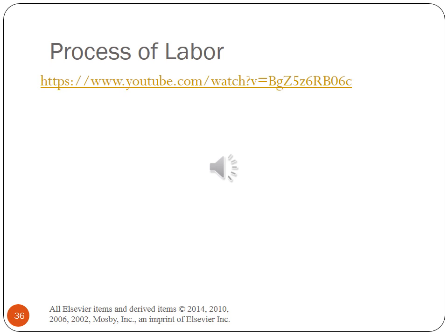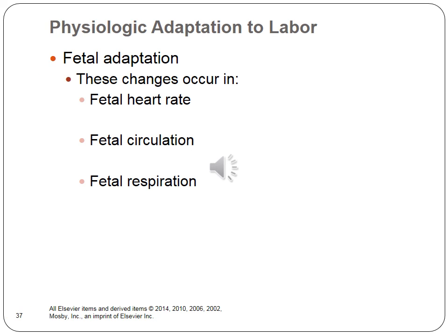This is a YouTube video depicting the process of labor. Fetal adaptation: changes include fetal heart rate, which early in gestation can be as high as 160 beats per minute, and at term around 140 beats per minute. Fetal circulation can be compromised if the cord is compressed. Uterine contractions tend to decrease circulation, but the fetus is able to compensate. In fetal respiration, chemoreceptors in the aorta and carotid prepare the fetus for initiating respiration.